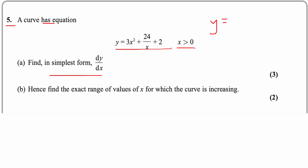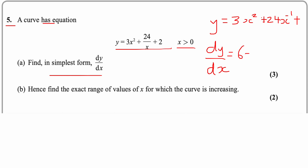Writing it in index form: y = 3x² + 24x⁻¹ + 2. Differentiating: the power comes down as a multiplier and reduces by 1. So 3 times 2 gives 6x. Differentiating 24x⁻¹: 24 times −1 gives −24x⁻². The constant differentiates to 0.